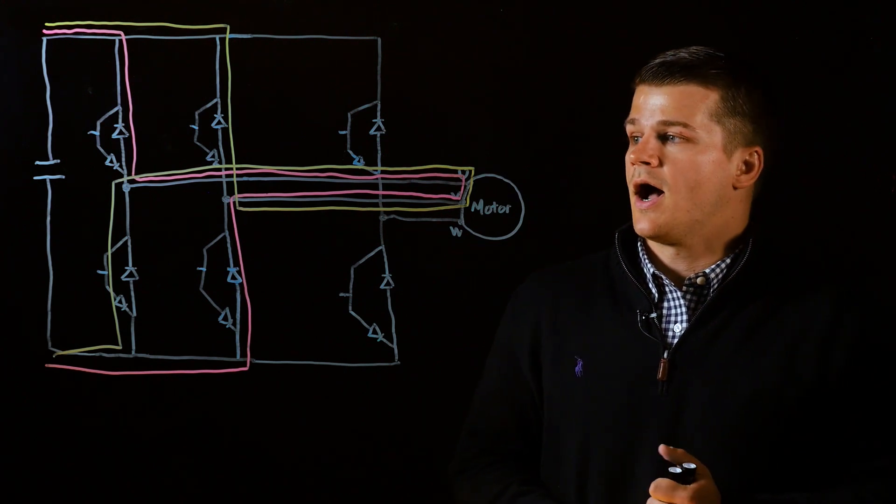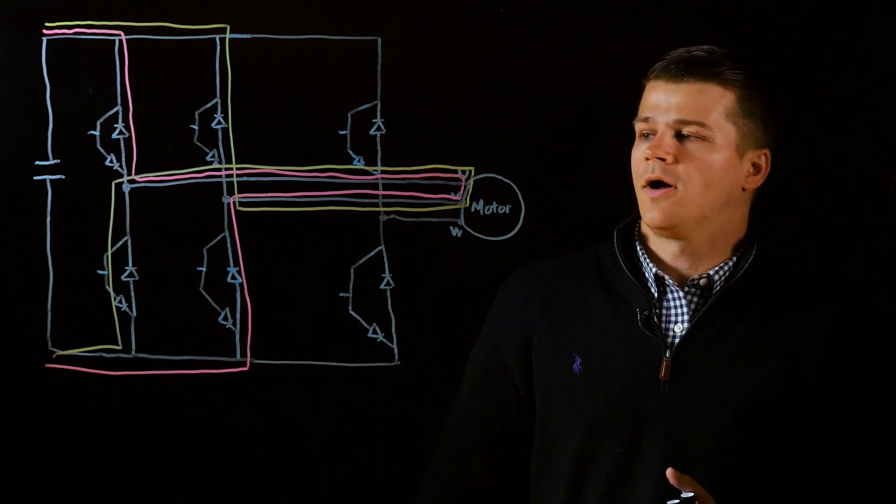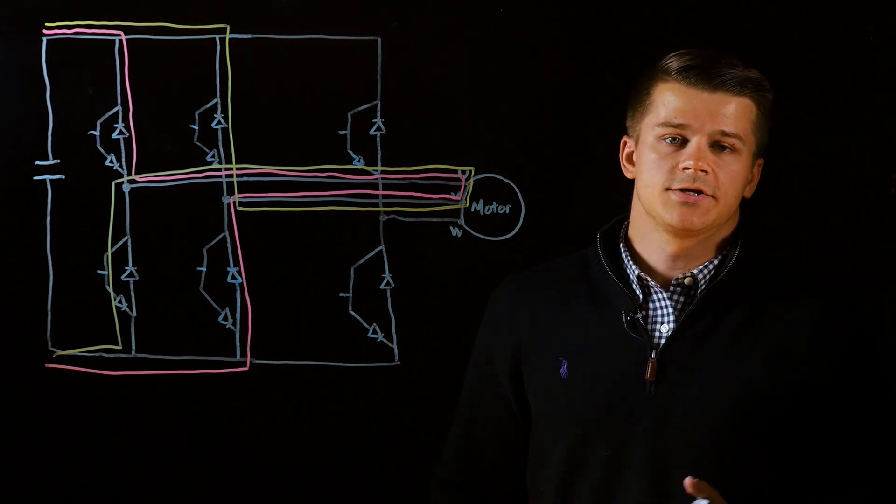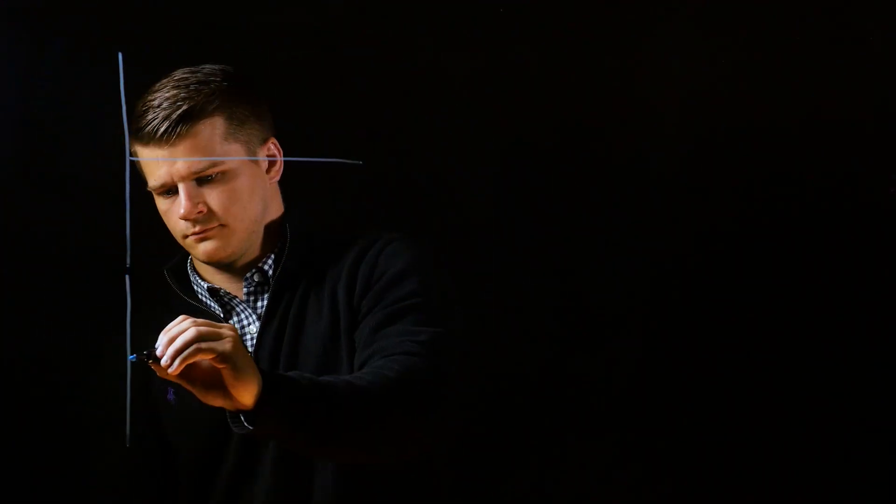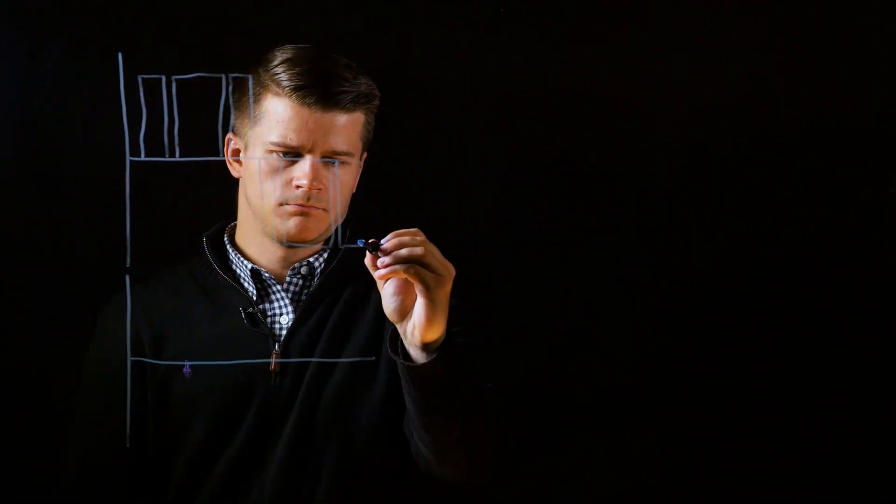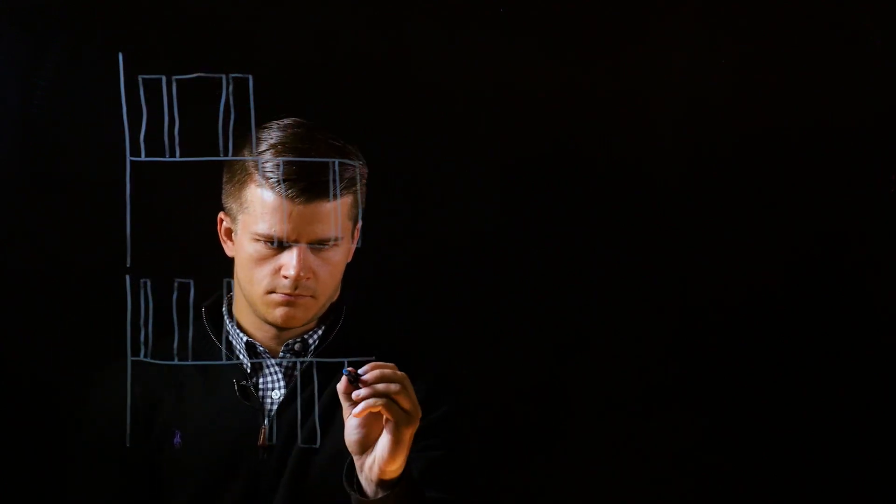So next we'll get into how the width portion of the pulse width modulation affects your RMS voltage to the motor. We covered how the pulse portion of the pulse width modulation is the switching on and off of the IGBTs. Next we're going to dive into the width portion.